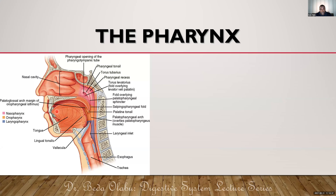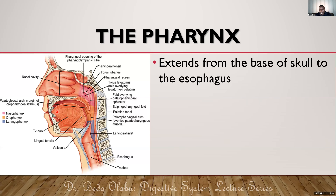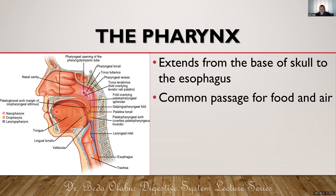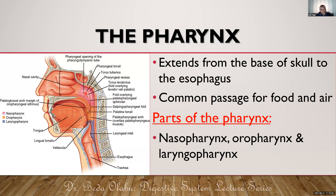From the oral cavity, food goes to the pharynx. The pharynx extends from the base of the skull to the upper part of the esophagus — it is a common passage for both food and air. We have three parts of the pharynx: the nasopharynx, the oropharynx, and the laryngopharynx, named based on which anatomical space is anterior to that segment. I won't talk much about the pharynx since we've covered it in previous sessions, but I can still ask you about it.